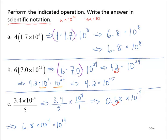And again, here, I'm multiplying numbers with the same base, base 10. Negative 1 plus 14 is 13. So 6.8 times 10 to the 13th power.